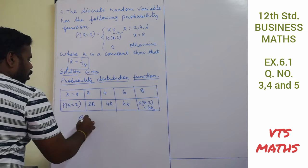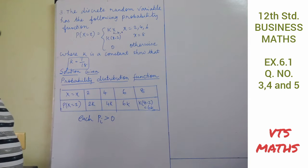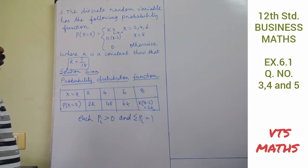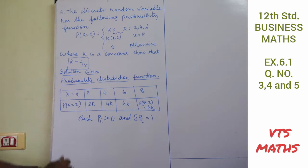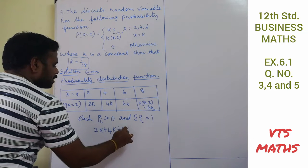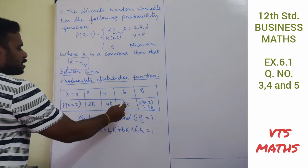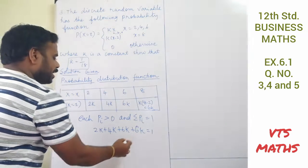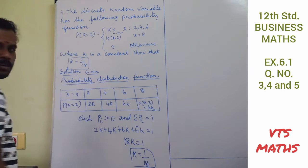Each probability value must be greater than or equal to 0, and the sum of all probability values must equal 1. Adding all values: 2k + 4k + 6k + 6k = 1. That gives 18k = 1, so the value of k is equal to 1/18.